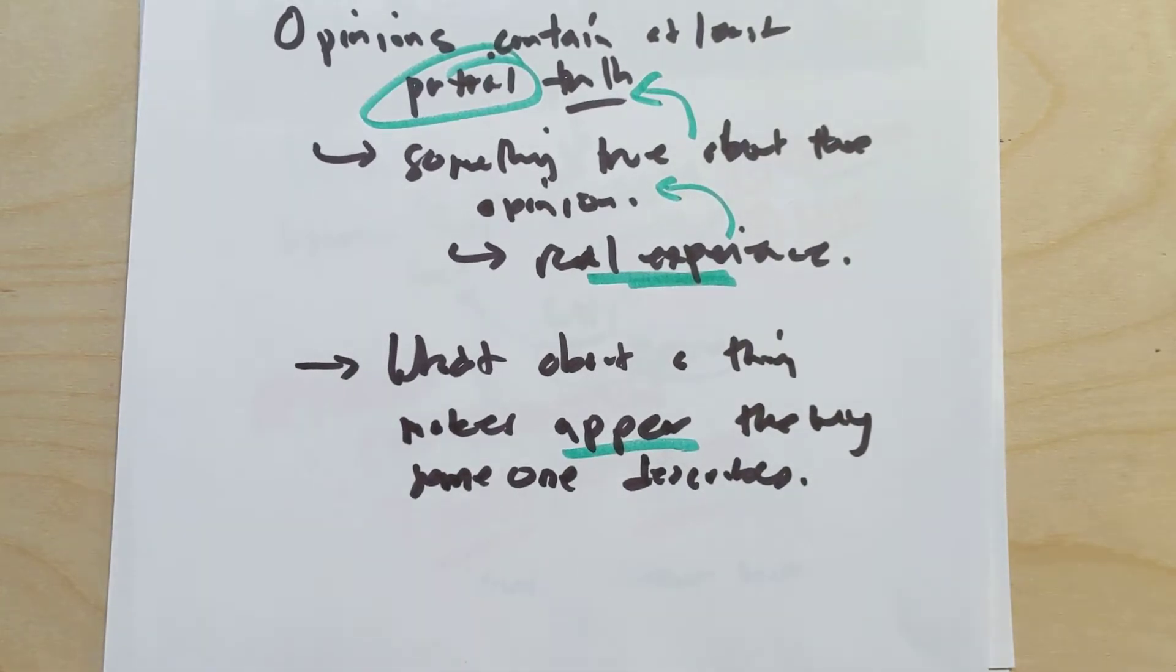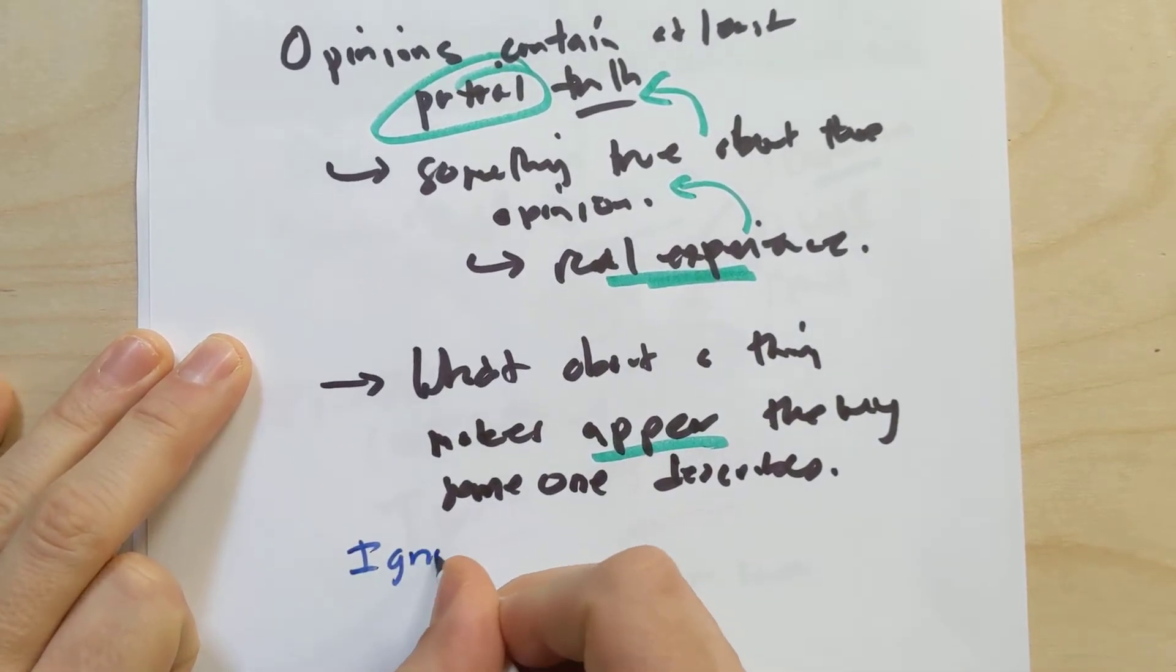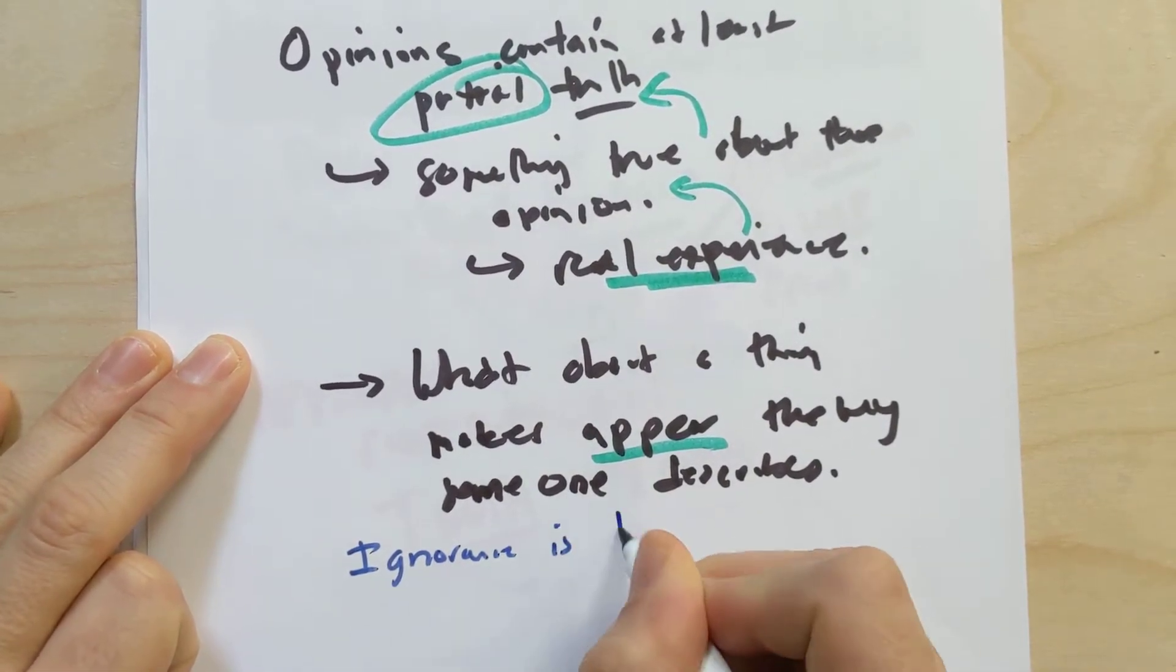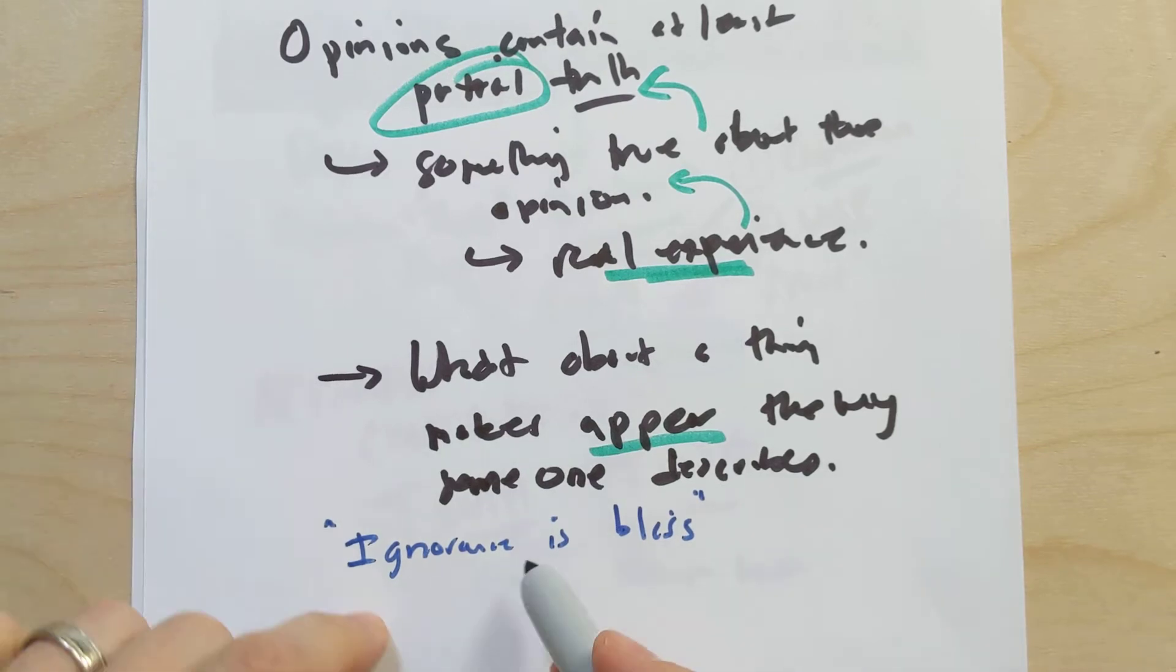We've even mentioned this phrase before: if someone says ignorance is bliss, the reason that they would say that and the reason it almost becomes a cliched statement is because there must be something true about it.